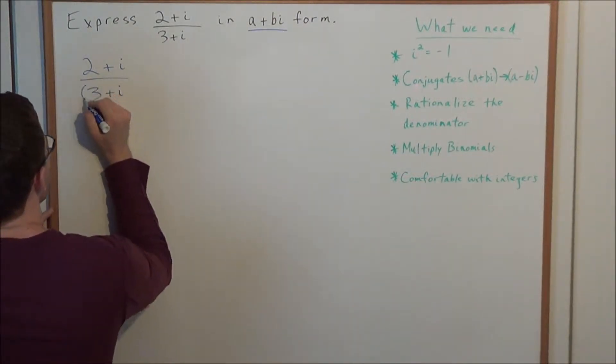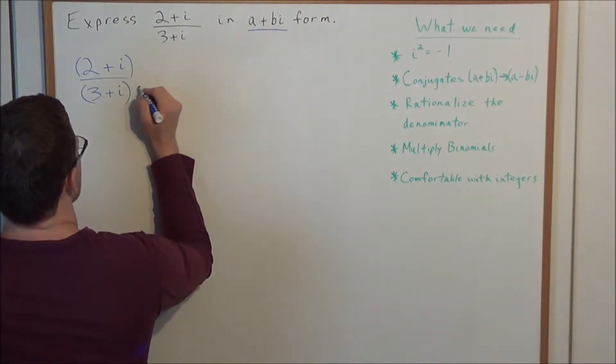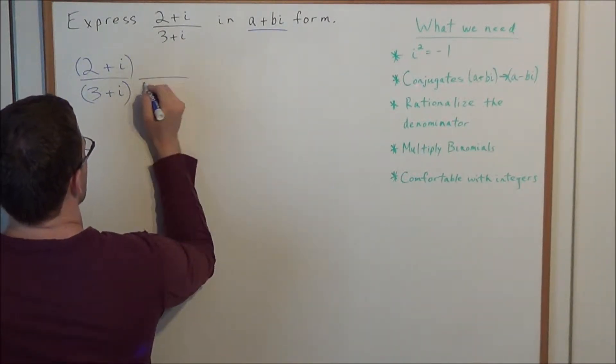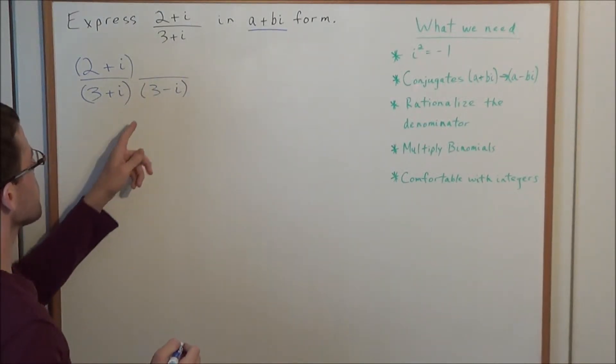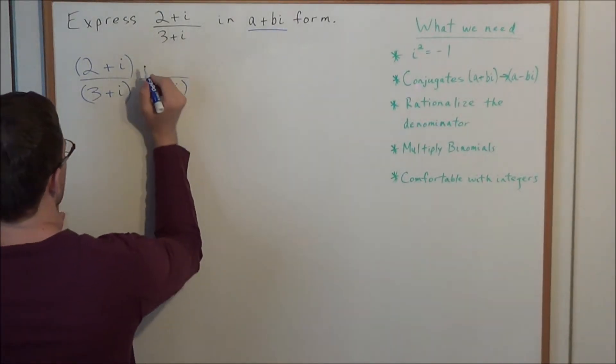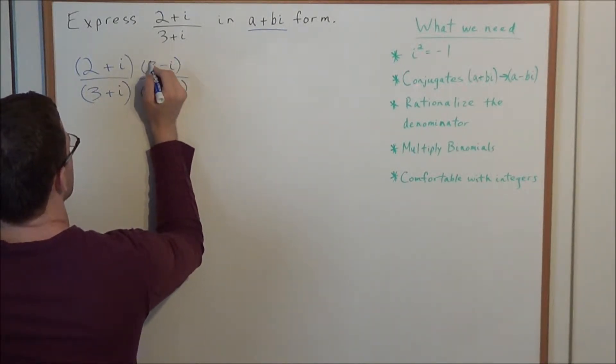So what are we going to do? We're going to multiply 3 plus i by its conjugate. And the conjugate of 3 plus i is 3 minus i. But now keep in mind if we multiply the denominator by 3 minus i, we also need to multiply the numerator by 3 minus i.